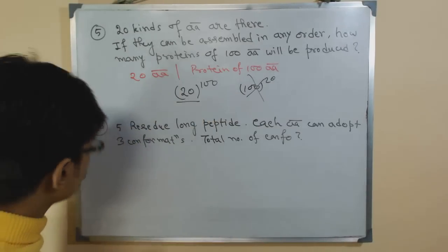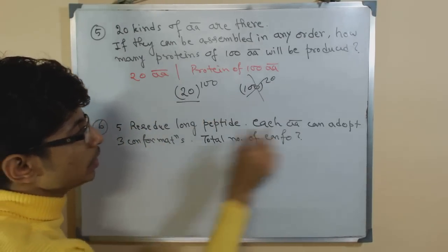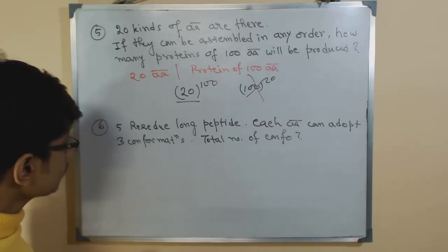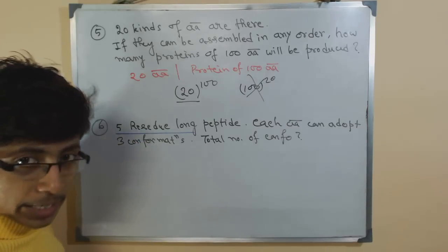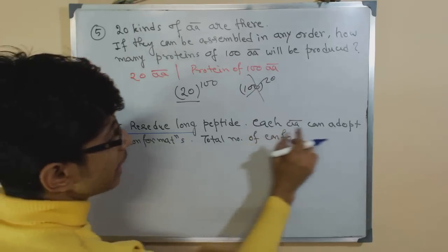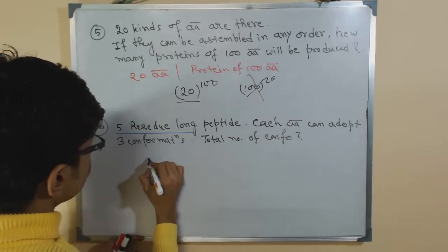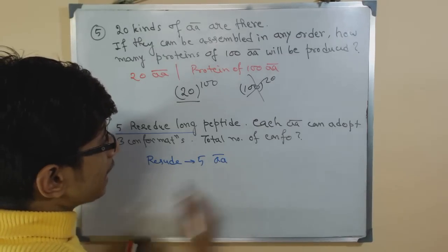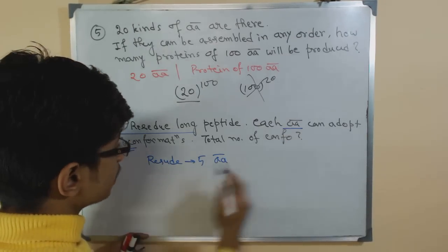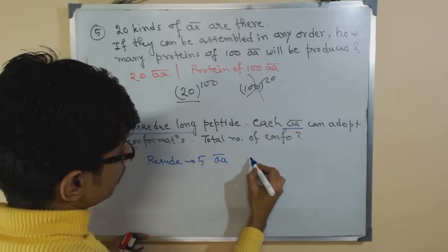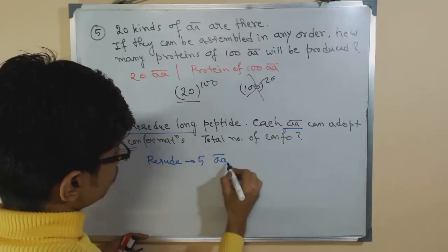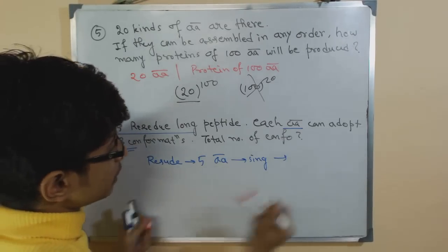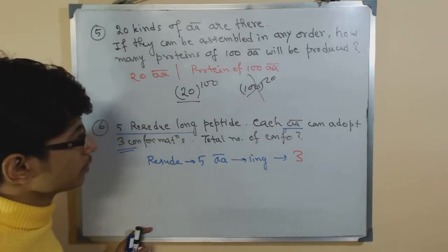The second question: a five-residue long peptide where each amino acid can adopt three conformations — what is the total number of conformations that can be achieved? So we have five amino acids, and each one can adopt three conformations — three different ways they can arrange.